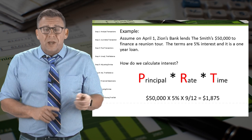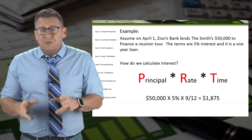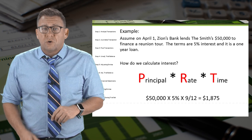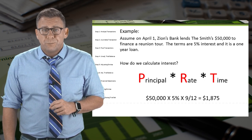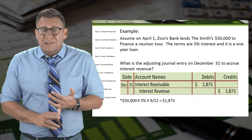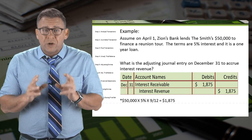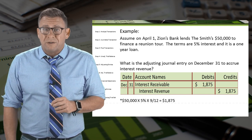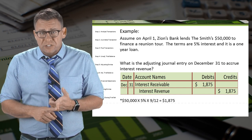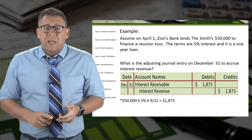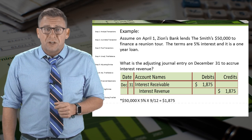April 1 to December 31st is 9 months. Thus, the amount of interest revenue to accrue is $1,875. Remember that we debit a receivable and credit a revenue when recording an adjusting entry to accrue revenue. In this example, we debit interest receivable and credit interest revenue for $1,875.